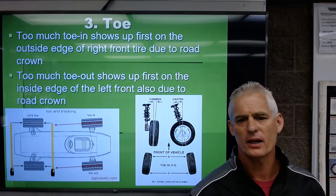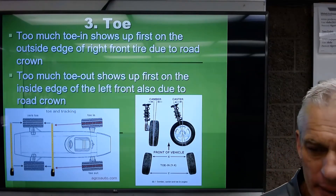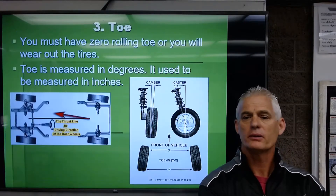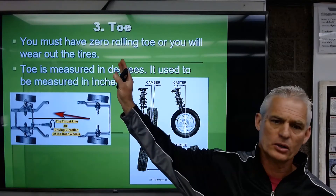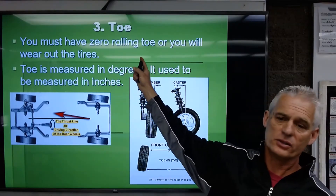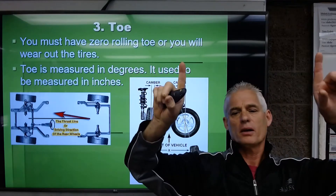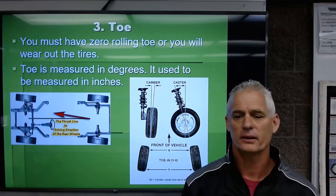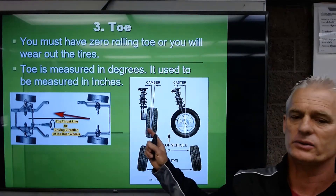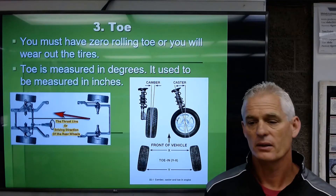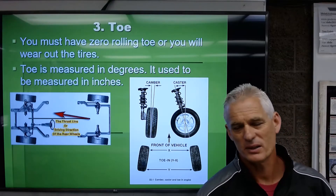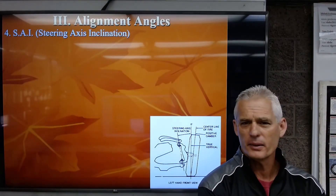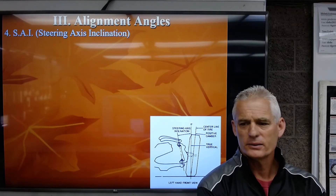You must have zero rolling toe to prevent tire wear. Most cars are set slightly toed in from the factory because road forces tend to deflect the tires outward as you drive. Toe is now measured in degrees, though it used to be measured in inches.